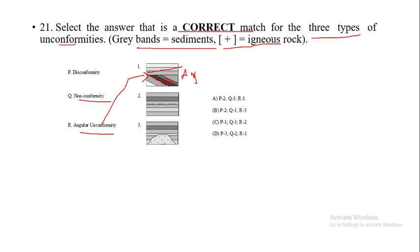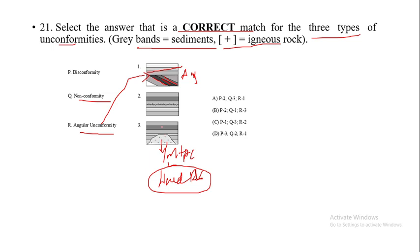Nonconformity separates overlying sedimentary rock from underlying igneous or metamorphic terrain. As seen in the diagram, the plus signs indicate igneous rock — this hard rock (igneous or metamorphic) is overlain by sedimentary rock, giving us a nonconformity.